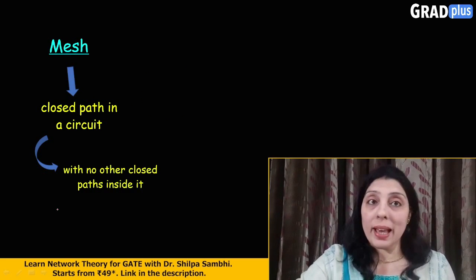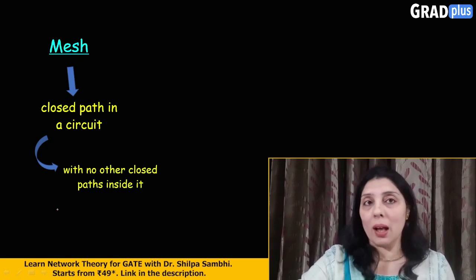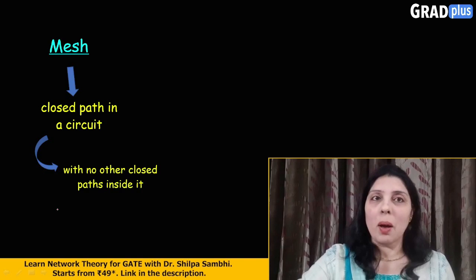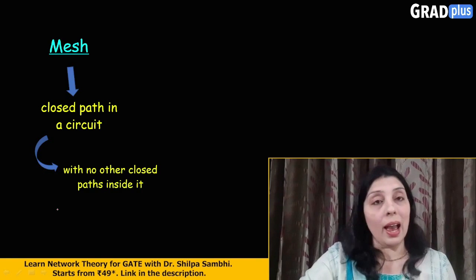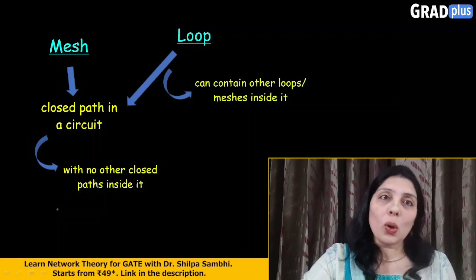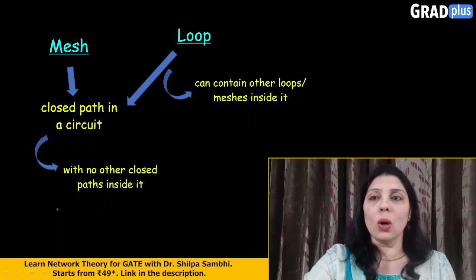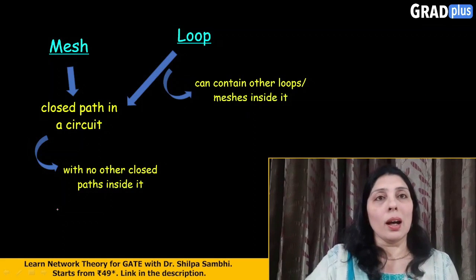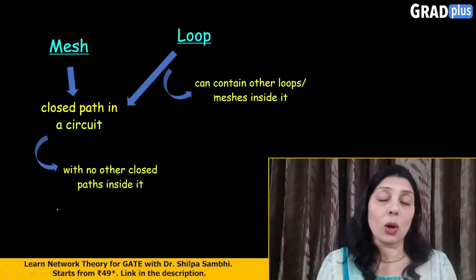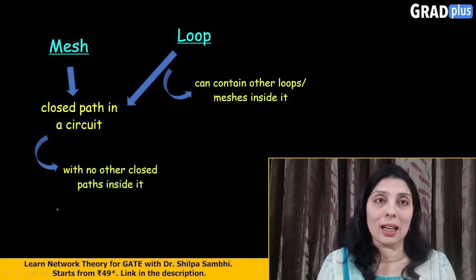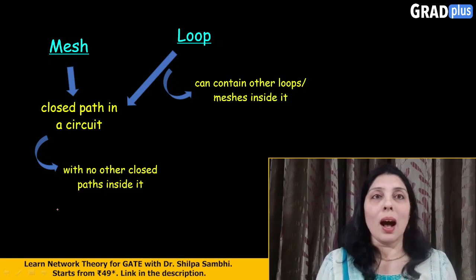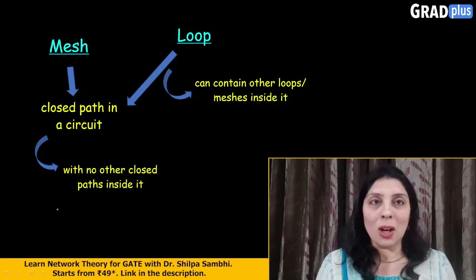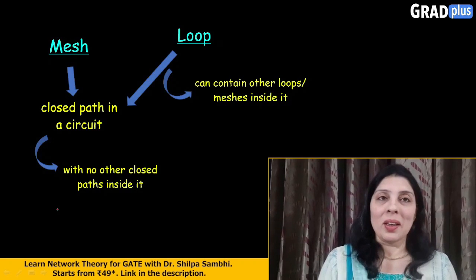A mesh is a closed path in a circuit but it has no other mesh inside it. And what is a loop? A loop is also a closed path in a circuit, but it may contain other meshes or loops inside it.